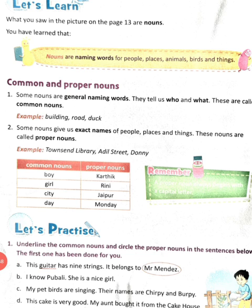Now we are going to start our topic with nouns. Nouns are naming words for people, places, animals, birds, and things. That is why nouns are called naming words.